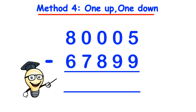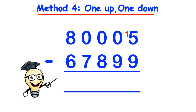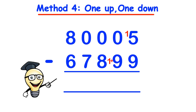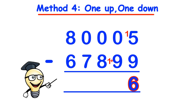Looking at 80,005 take away 67,899, we start on the right hand side. Since 5 is less than 9 and cannot subtract 9, we put a 1 in front of the 5 to make 15 — this is the 1 up. We then look at the next digit along in the bottom row and put a 1 in front of that — this is the 1 down — and add it to the actual digit: 1 plus 9 becomes 10. So now 15 take away 9 gives us 6, which we put in the answer line. Moving to the next column, 0 take away 10 cannot be done, so we put 1 up — making 10 — and 1 down: 1 with the 8 makes 9. So 10 take away 10 is 0.